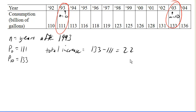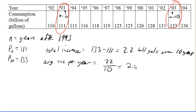22 billion gallons over those 10 years. Now remember, that's over the 10 years. And so to find the average increase per year, we're going to need to take that 22 billion gallons and divide it by the number of years that have passed. So we're going to divide it by 10 and get 2.2 billion gallons per year as our average increase per year.